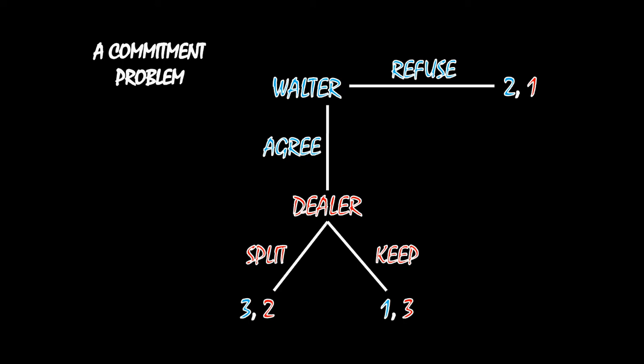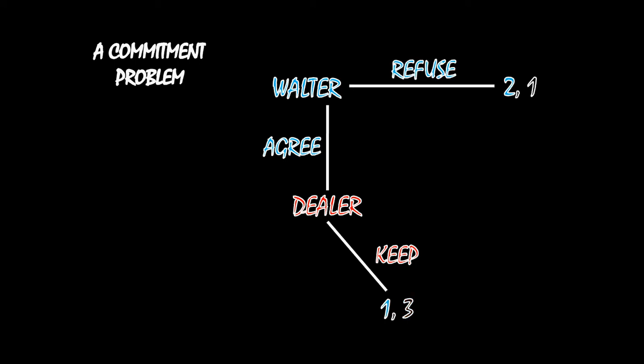The best way to solve these situations is to start at the end and work your way back. So rather than looking at Walter's decision first, I want to look at the dealer's decision. I've blacked out Walter's payoffs — we only need to focus on the dealer's payoffs here. If Walter were to agree to a deal, the dealer is going to keep the money, because keeping gives the dealer more money than splitting. If the dealer has a bunch of money in his hands and there's no benefit to giving any back to Walter, the dealer is going to keep it for himself. So we know that if Walter agrees to the deal, the dealer is going to keep the money. Taking that knowledge and working backward: if Walt agrees to the deal, the dealer keeps the money and Walt gets screwed. Walt would rather not take the risk of making all the drugs and wasting all that time only to get nothing out of it, so he should refuse.